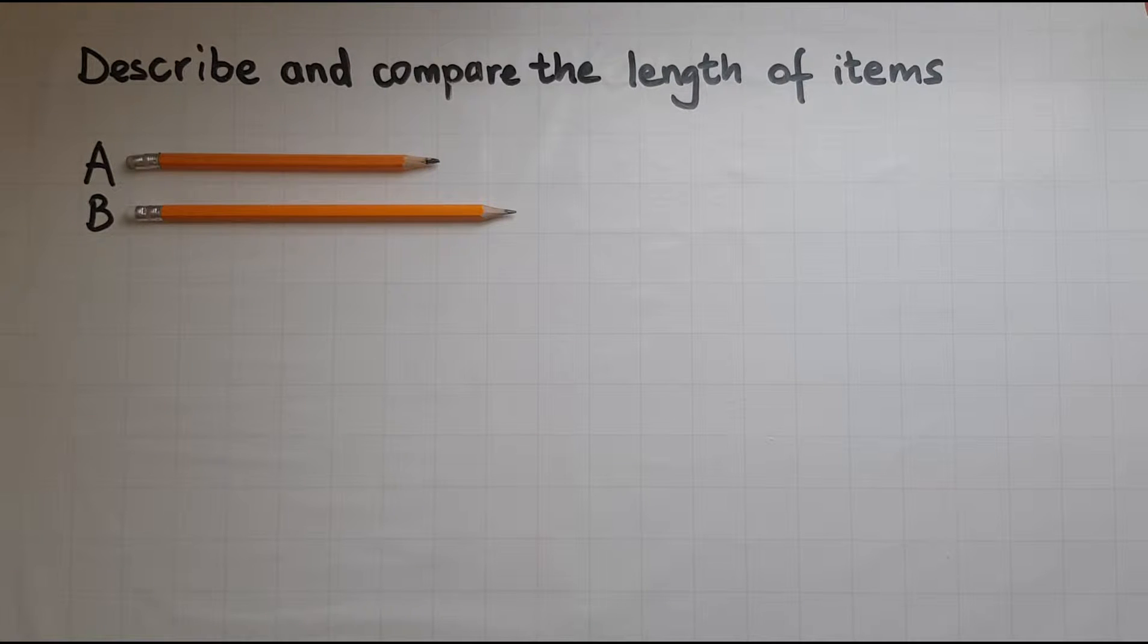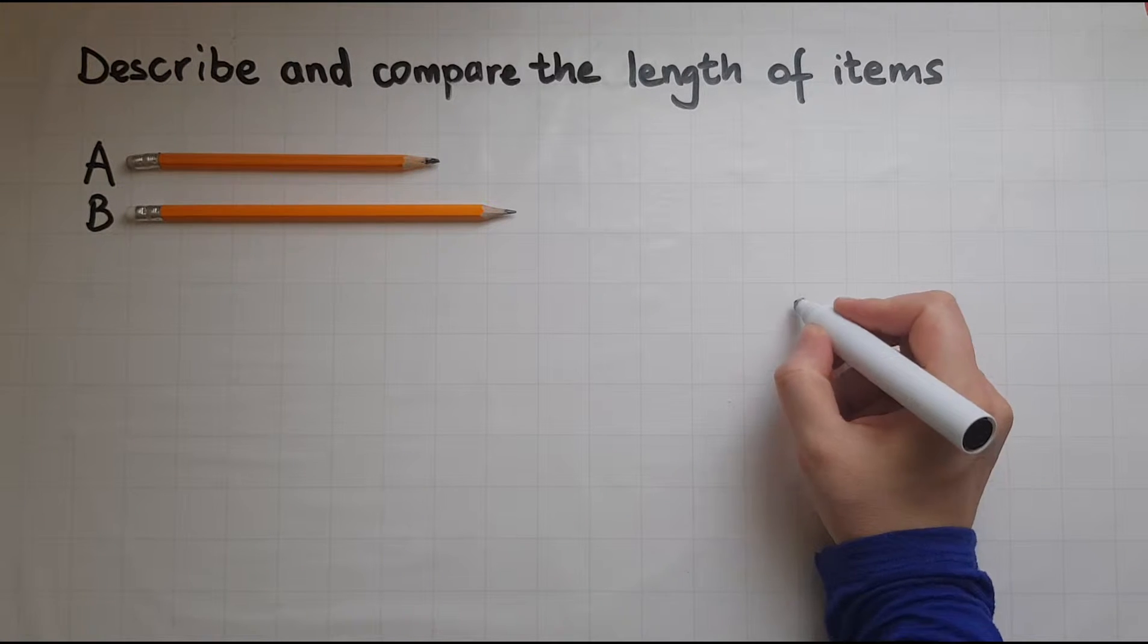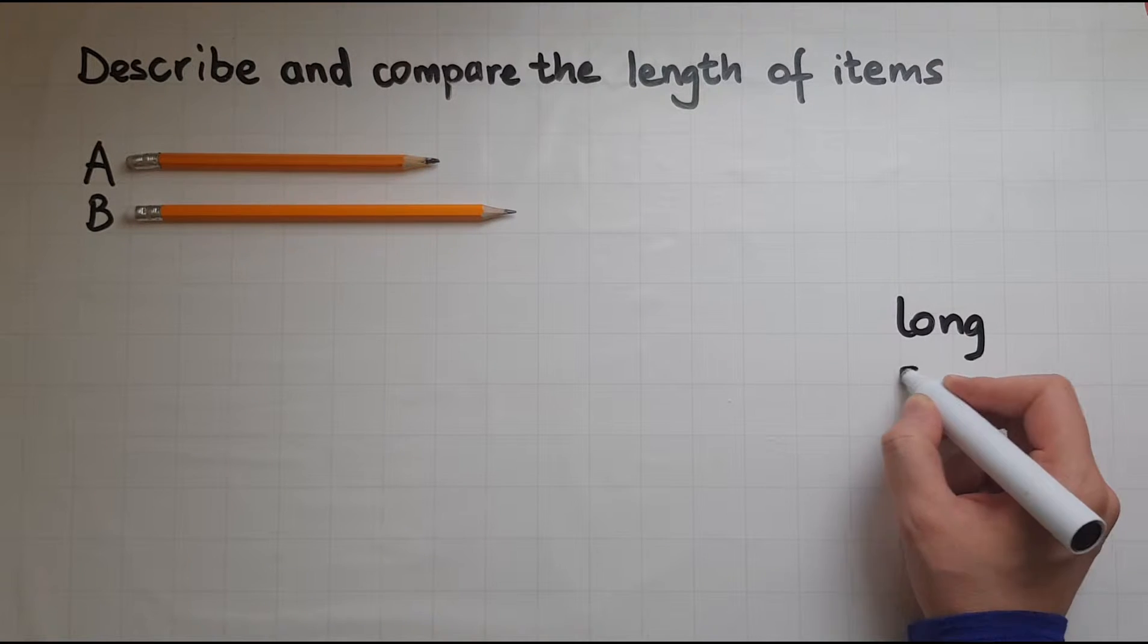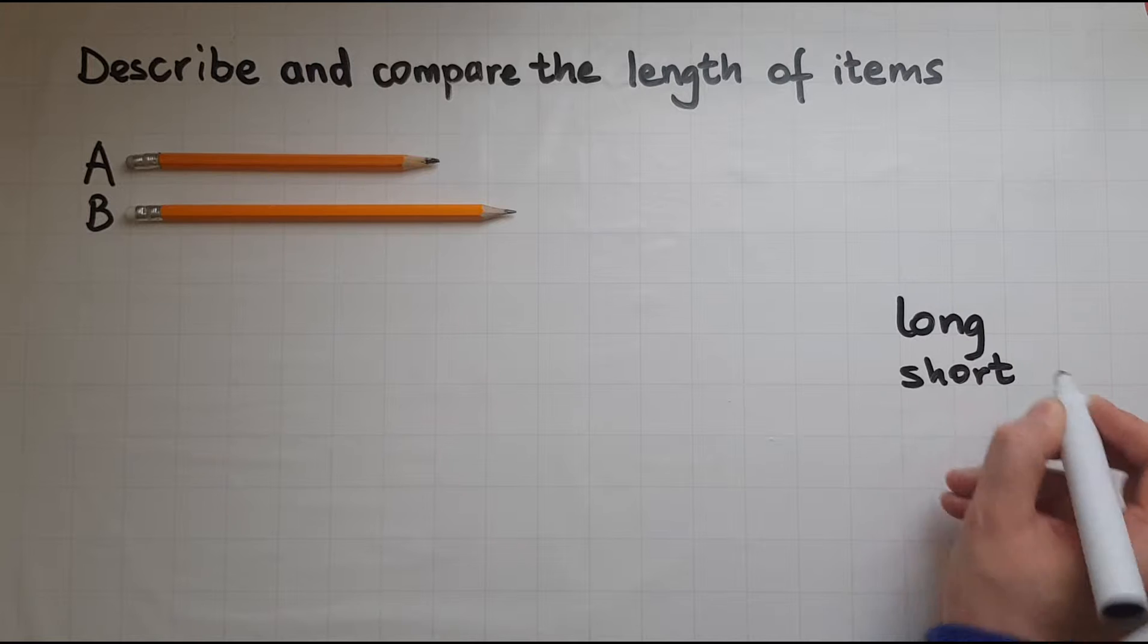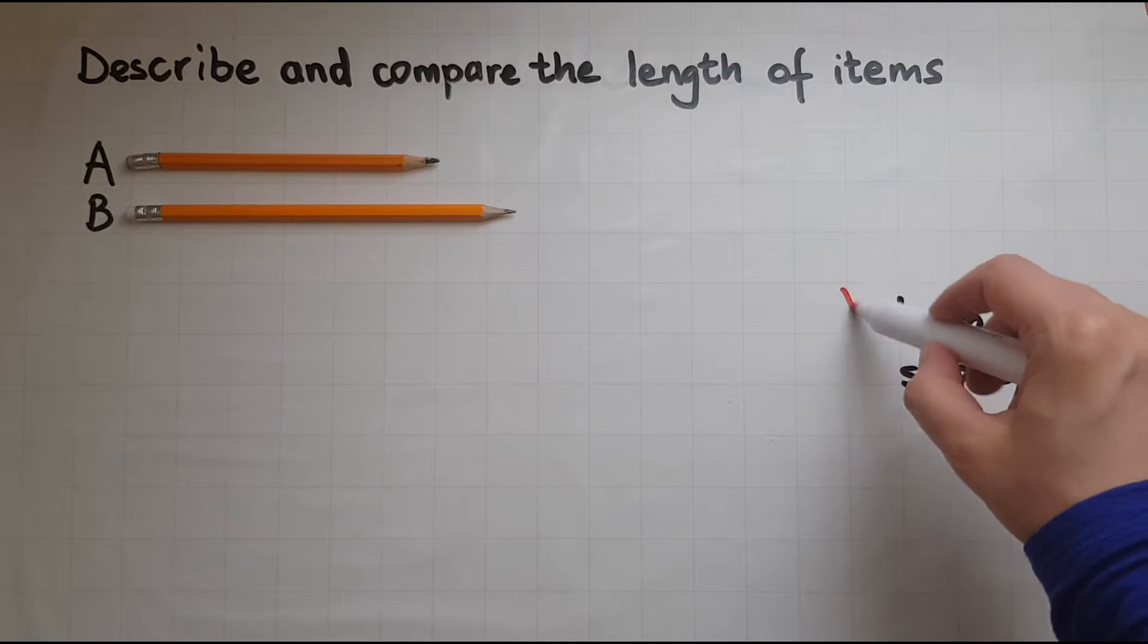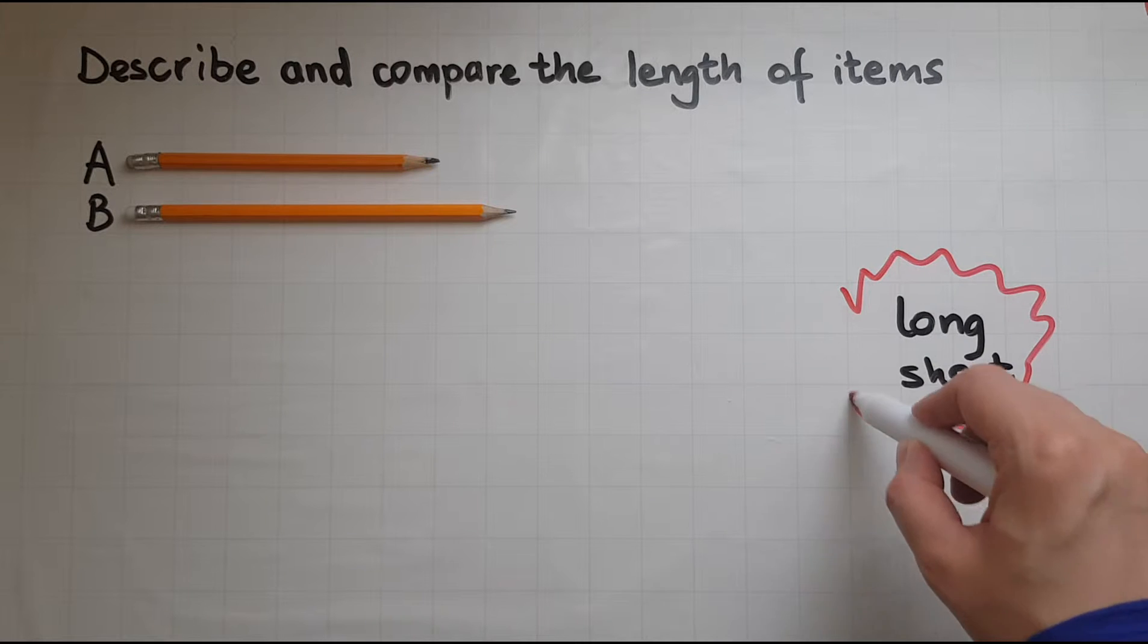The two words that we use normally to describe the length of something is long and short. So these are two key words that we use when we describe length.